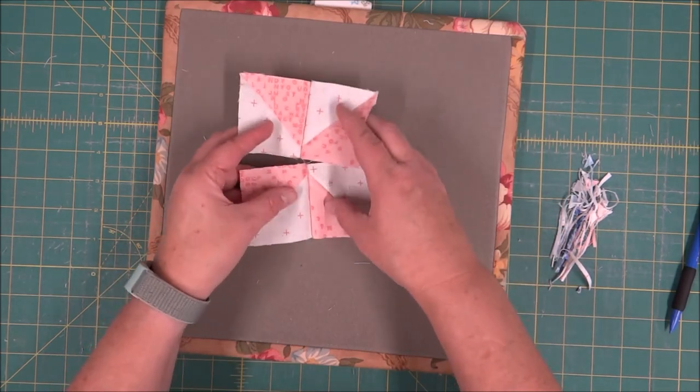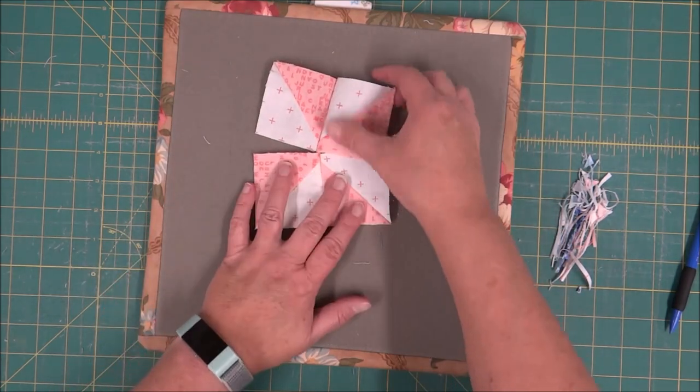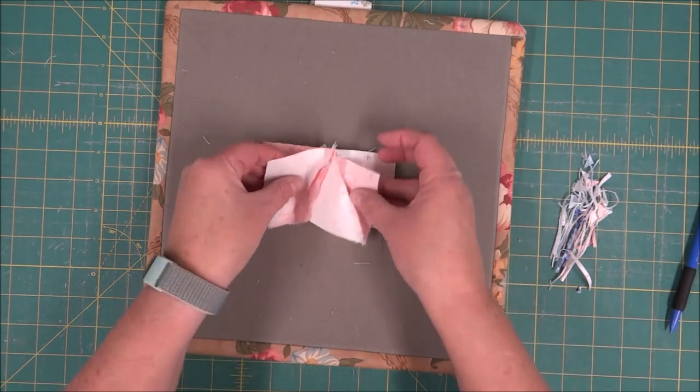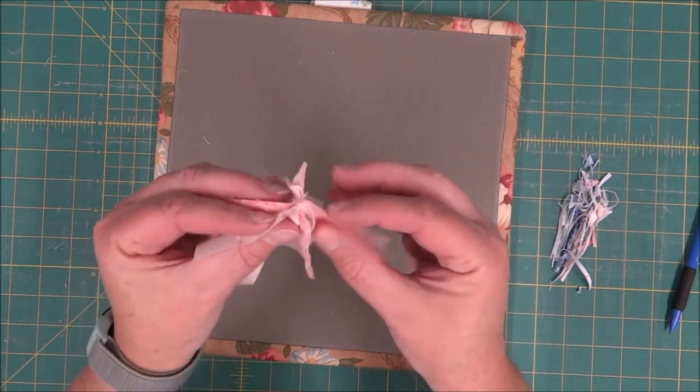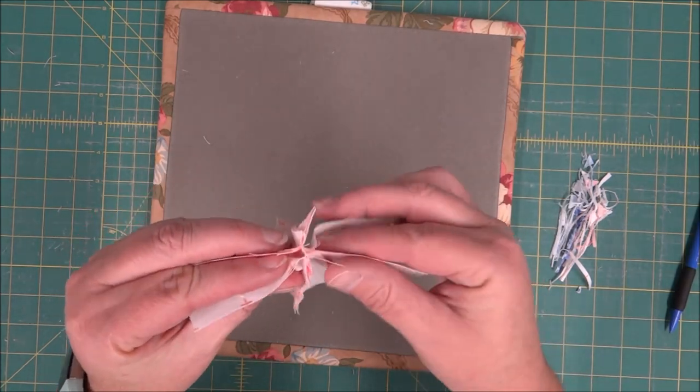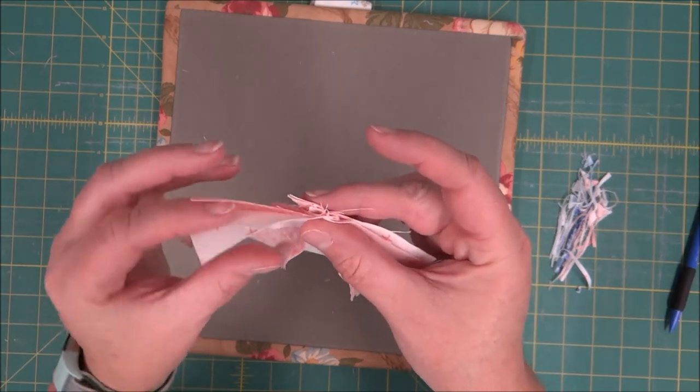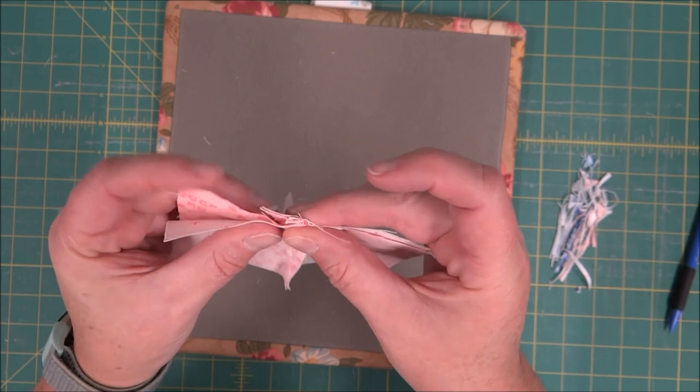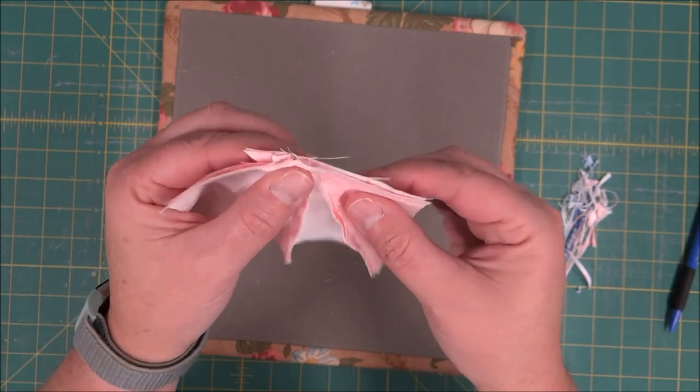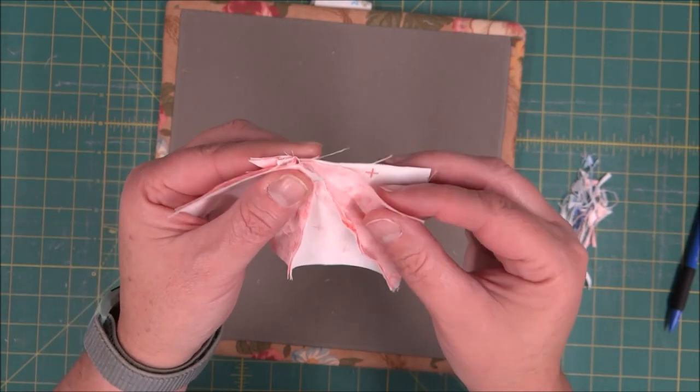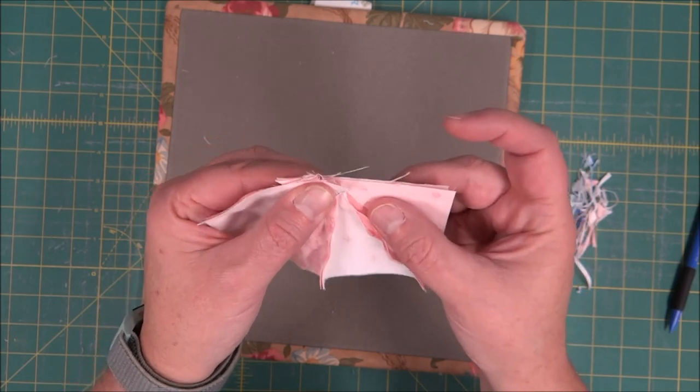Once you have those two rows sewn together, you can go ahead and fold it over and line up that center seam. Make sure that you have all of that bulk going one direction or the other. They need to be going the opposite and then they'll kind of lay flat and nest together. Put a pin in there if you need to secure it.